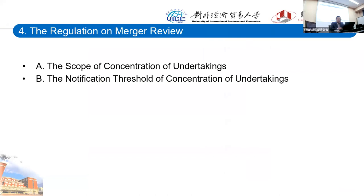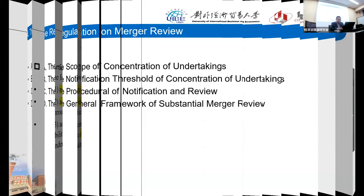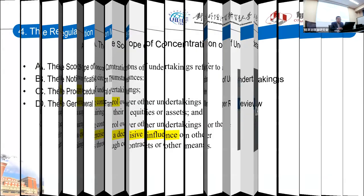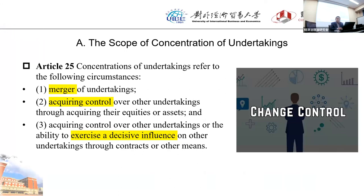The fourth part — merger review — has many changes in the newly amended AML. There are four key elements. First, the scope of concentration of undertakings remains basically the same: in China there are three kinds of change of control — merger, acquiring control, or having excessive influence on other parties. Although the wording is simple, real cases present many difficulties.